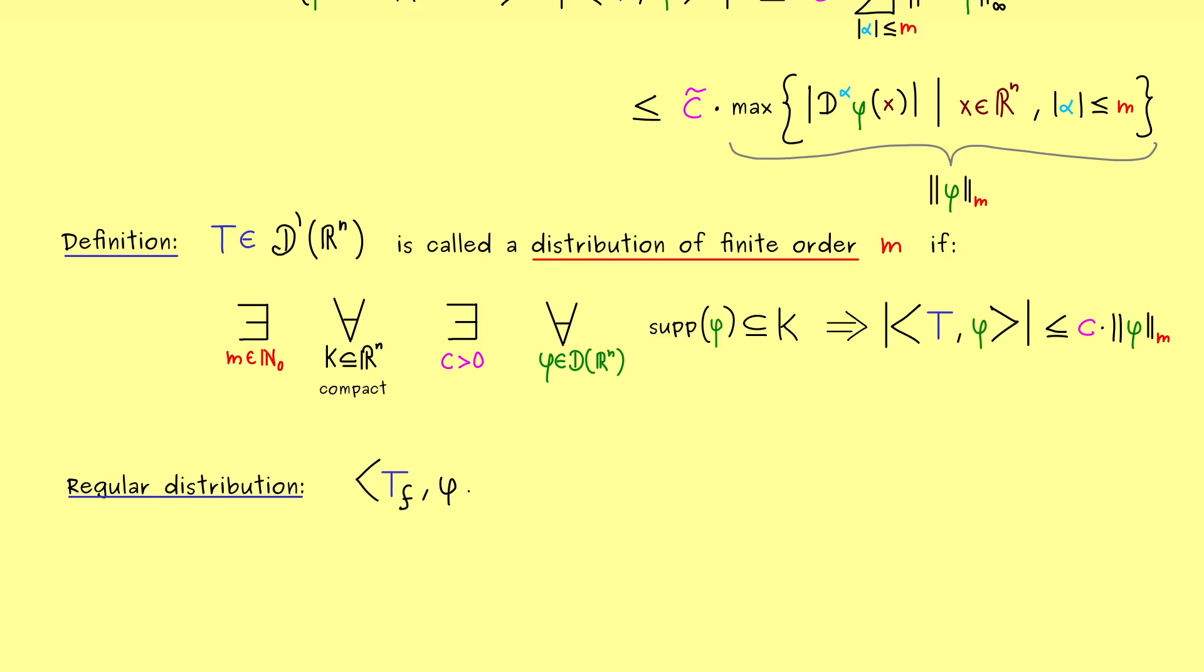Therefore, this duality pairing with the test function φ can be rewritten as an integral. And if we take a test function inside the compact domain K, we can just integrate over K. And then we just have f times φ.